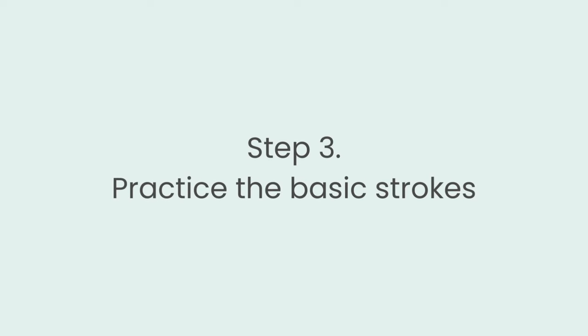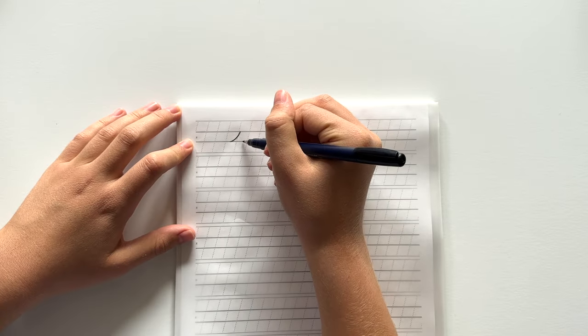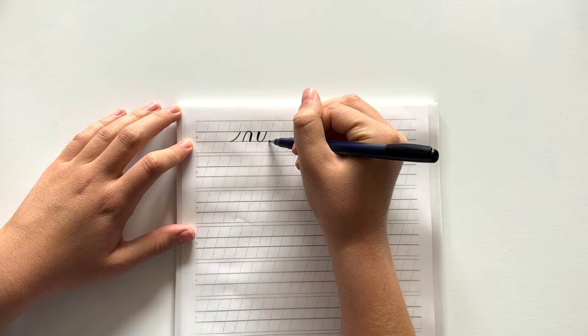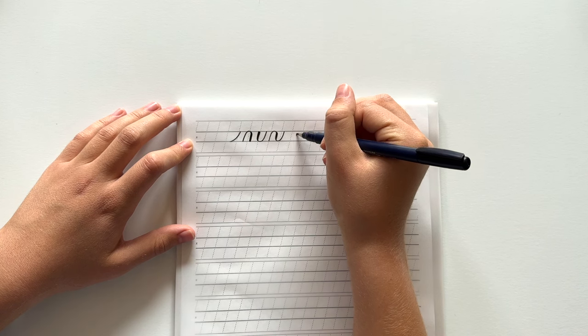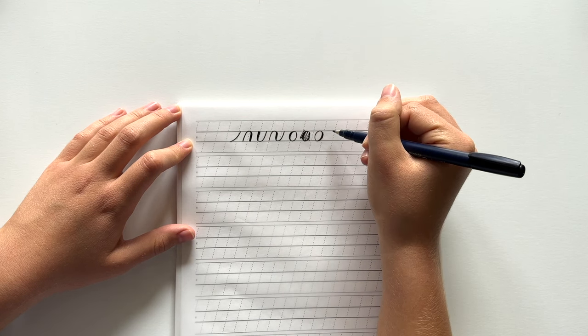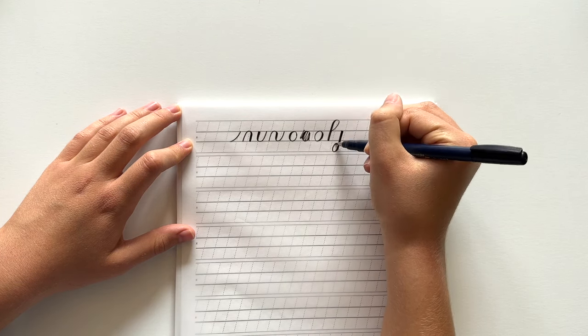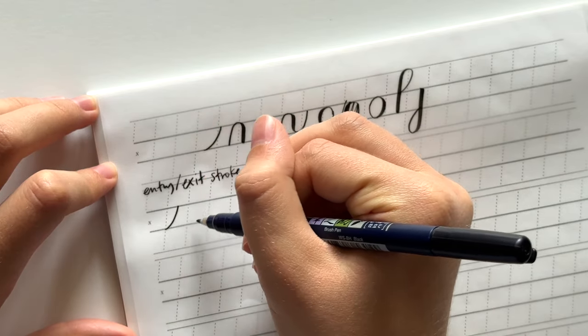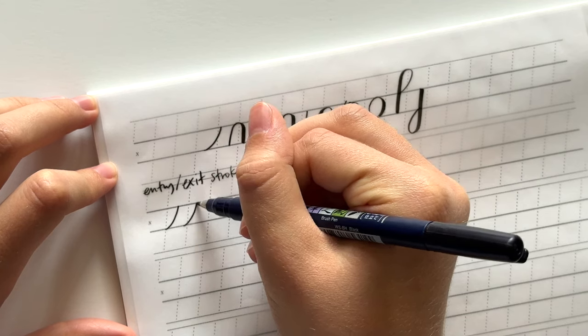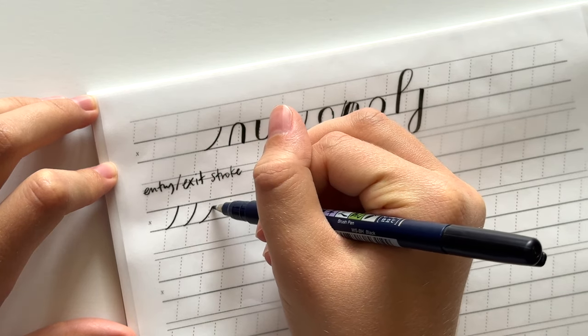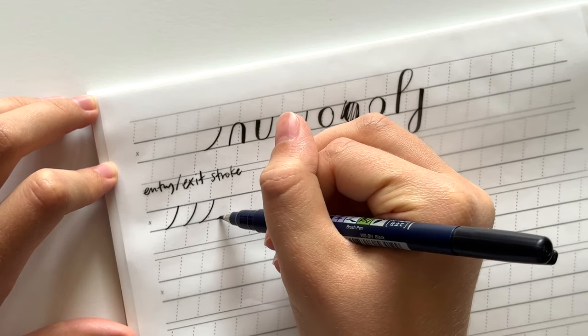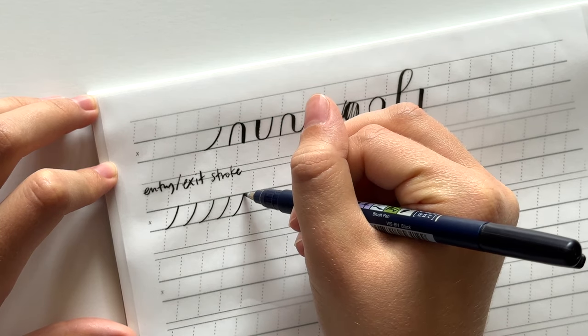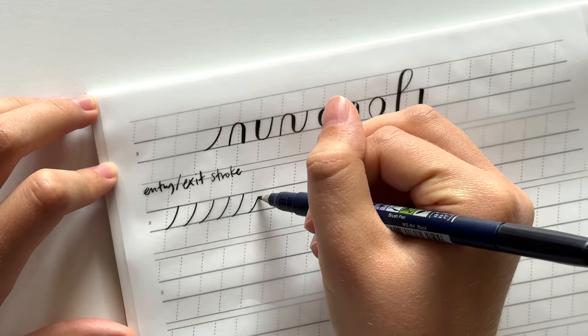Next step is to practice the basic strokes. So there are about eight basic strokes and they're kind of like the building blocks of letters. So it's really important to practice these strokes before you start trying to write letters or you'll probably just get really frustrated. So the first basic stroke is the entry slash exit stroke. This is a thin, light line that has a slight curve to it. So we're using light pressure at the tip of the pen and this stroke is going in an upwards direction.